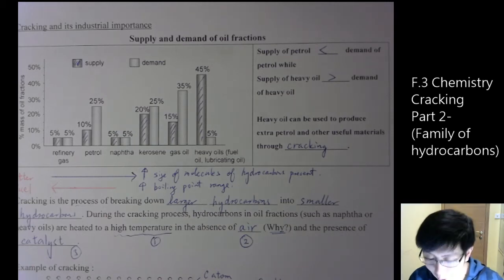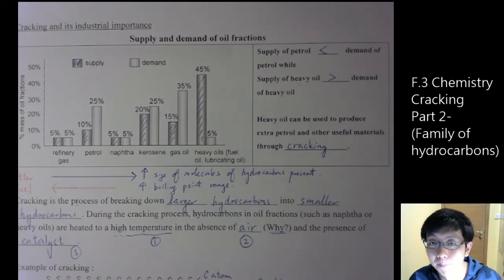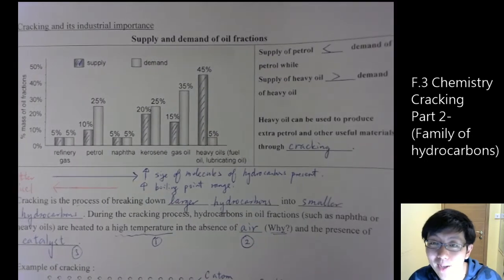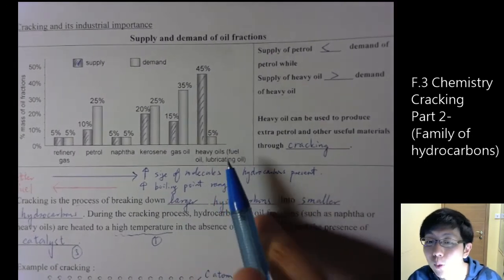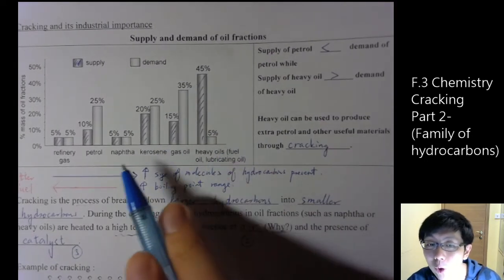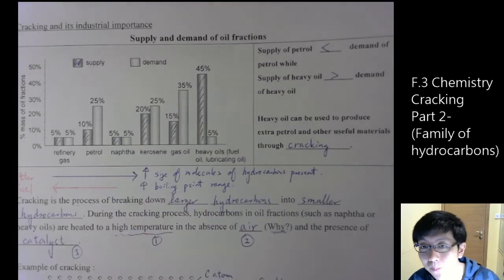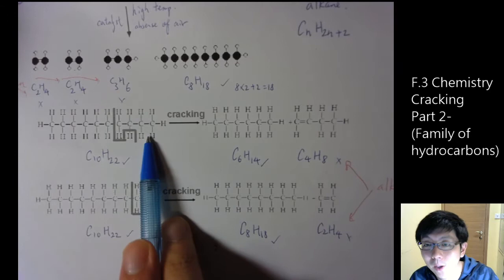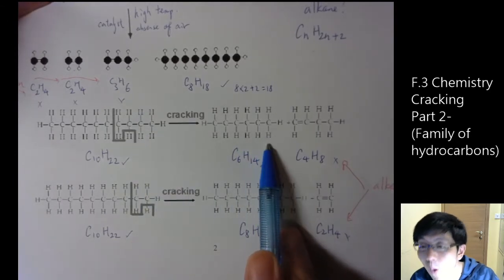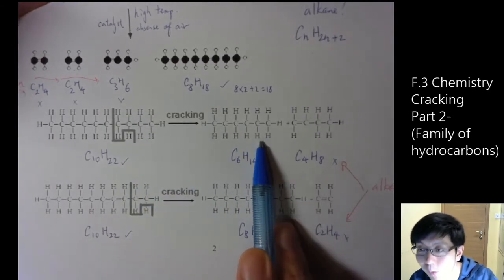So we go back to page 2 of the worksheet. Originally, scientists wanted to break down heavy oils to produce extra petrol because we can rearrange the carbon and hydrogen atoms to give smaller hydrocarbons. They are better fuels.